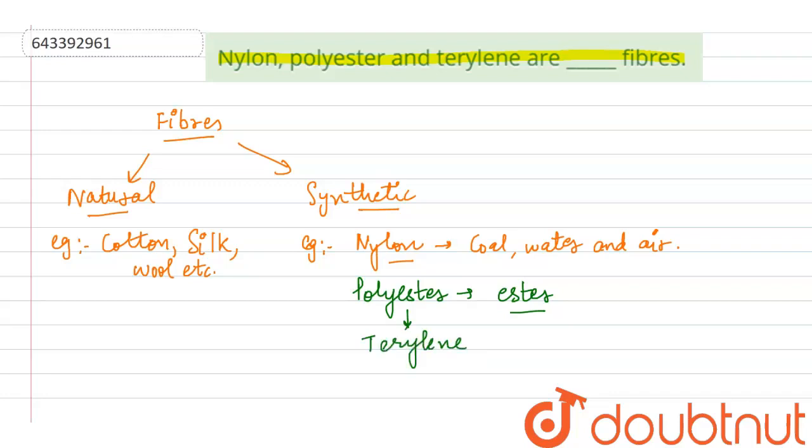Polyester has a type that is terylene, which is the most common and it is a very popular fiber. It is woven like yarn.